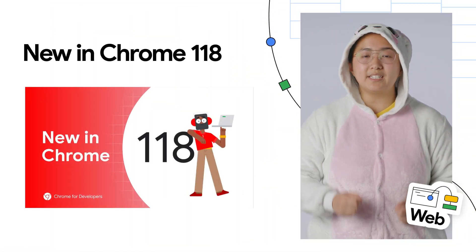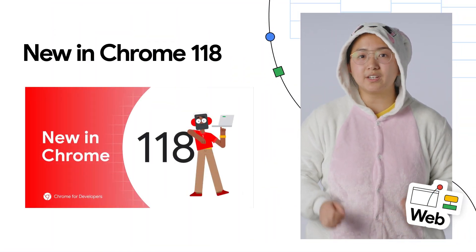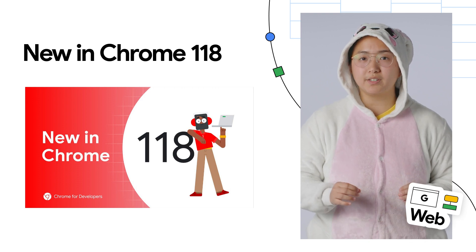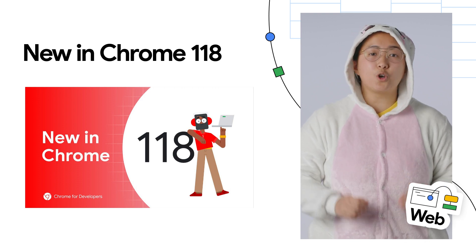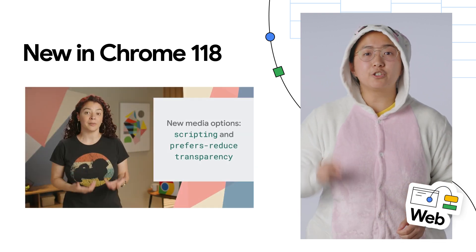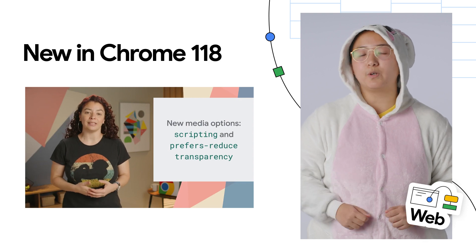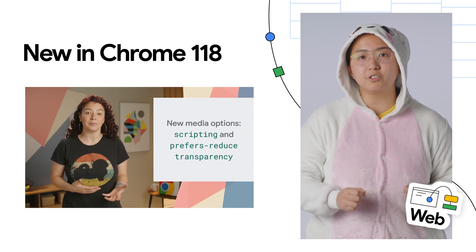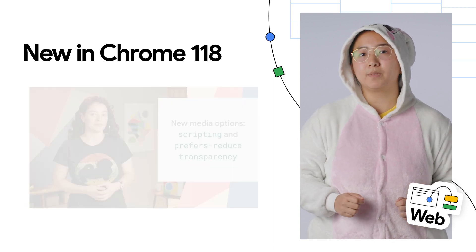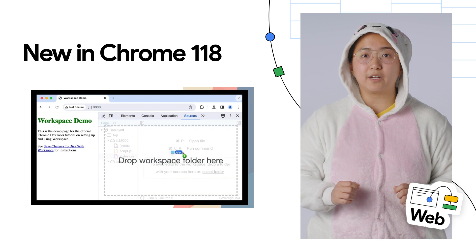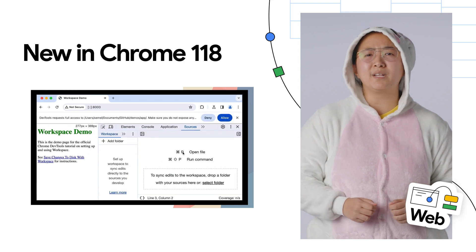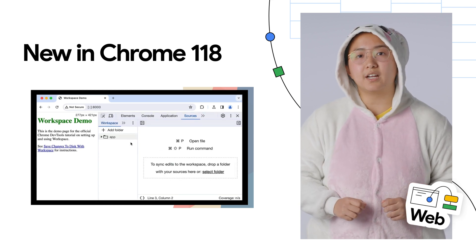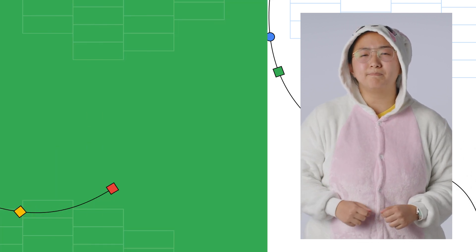On Chrome with the 1.18 release, you can declare specific styles within a component with a new scope at CSS rule. There's also two new media queries — scripting and prefers reduced transparency — an improved DevTools sources panel, and plenty more. For the full details, check out the video linked in the description.